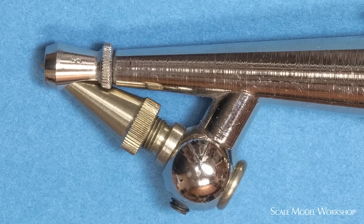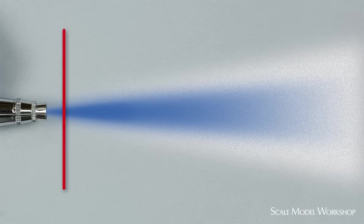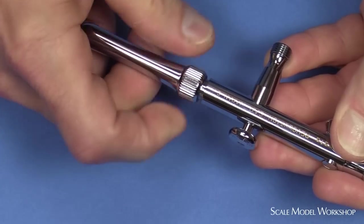This allows you to put the business end nearly in contact with the surface. The secret to getting a sharp edge or a finer line has more to do with proximity, and then you need to adjust the air pressure and material flow to accommodate how close you are.